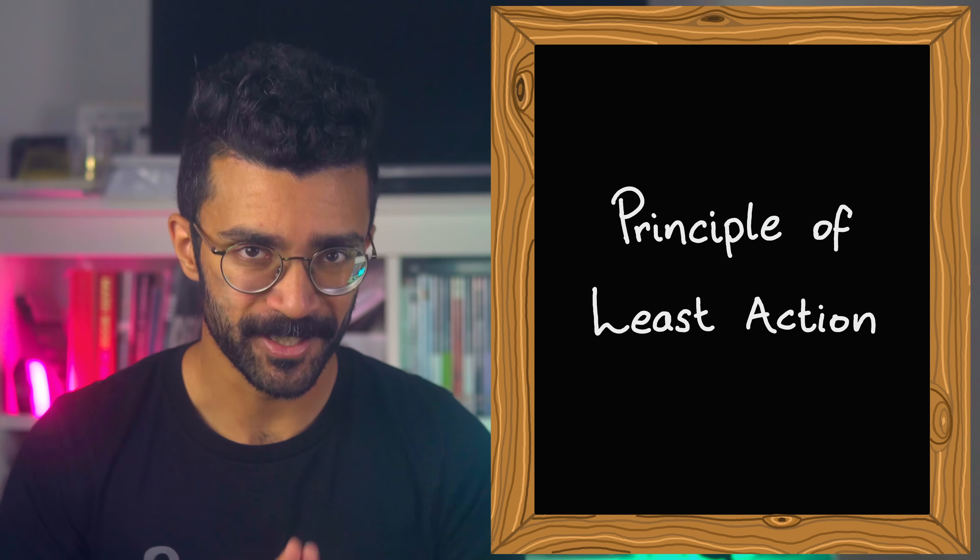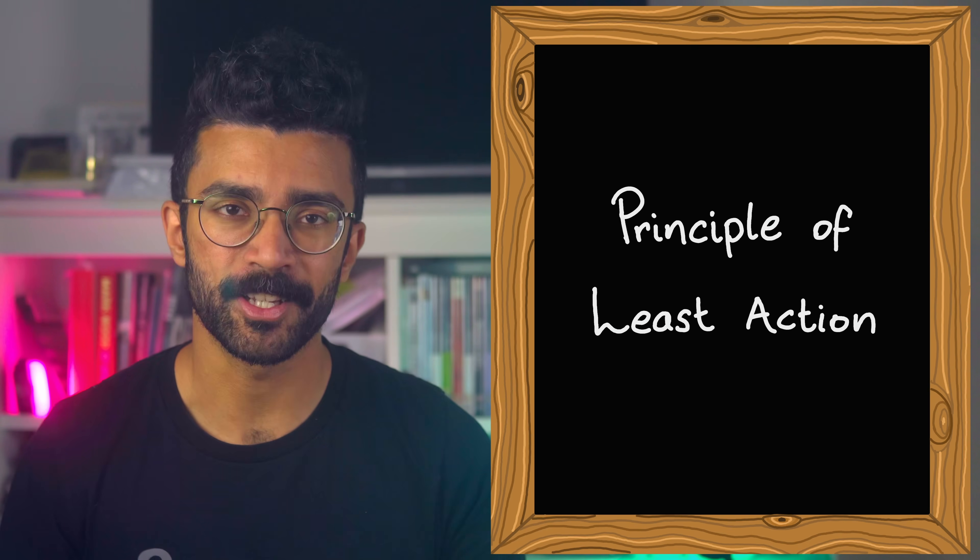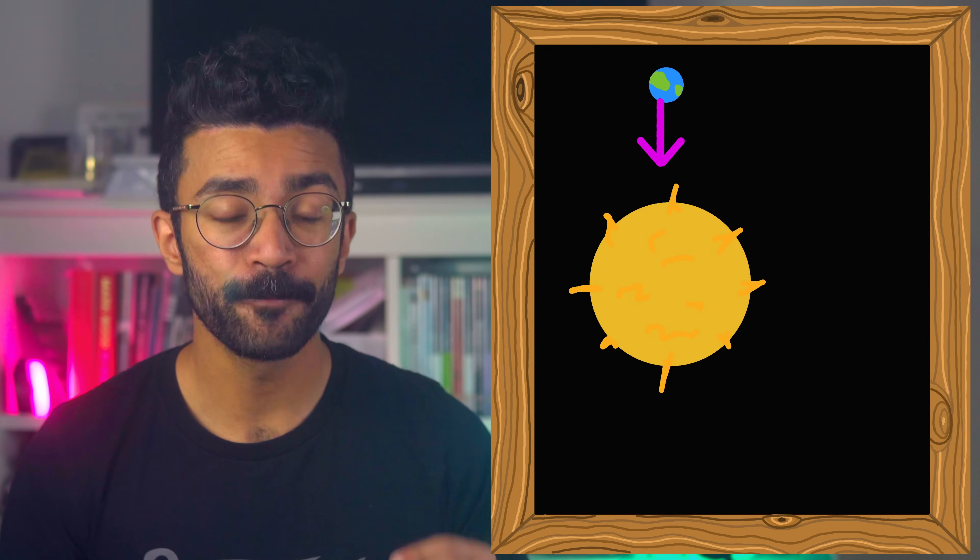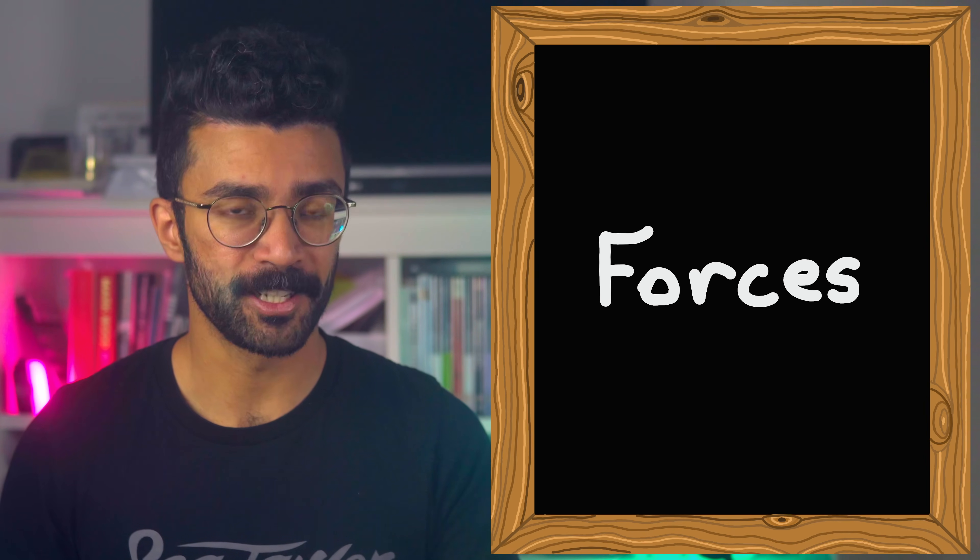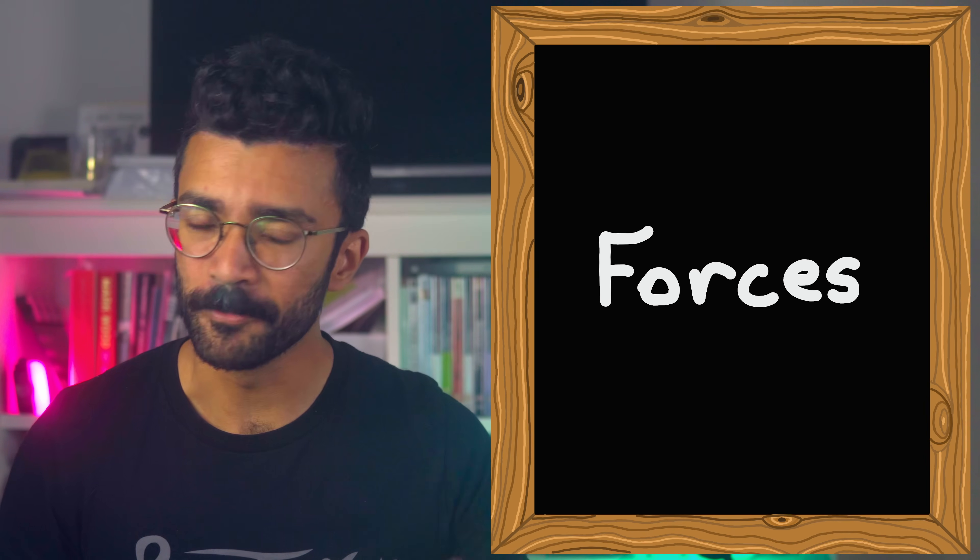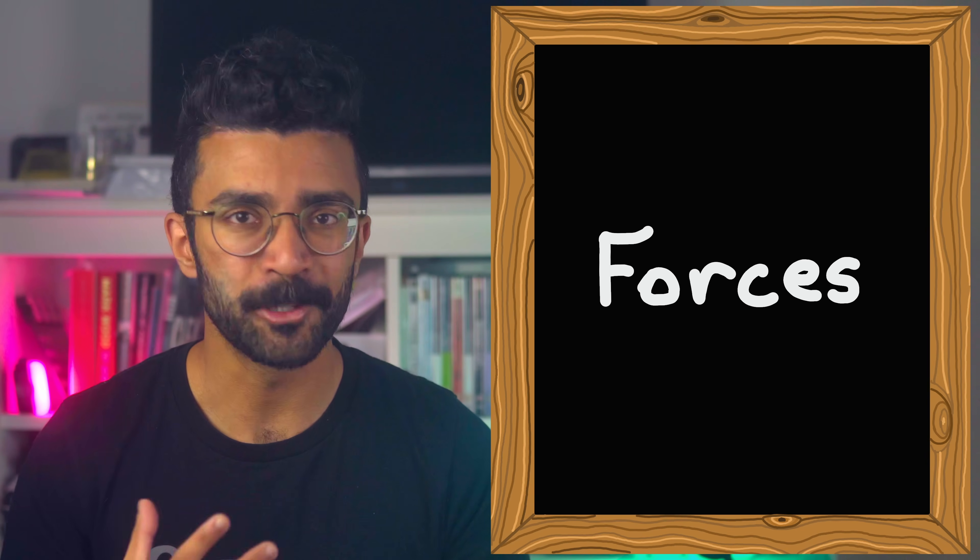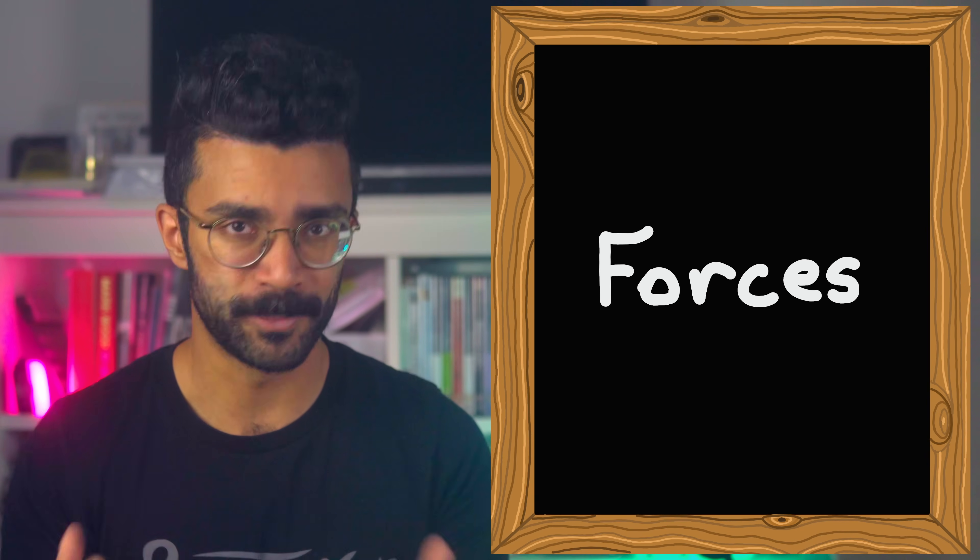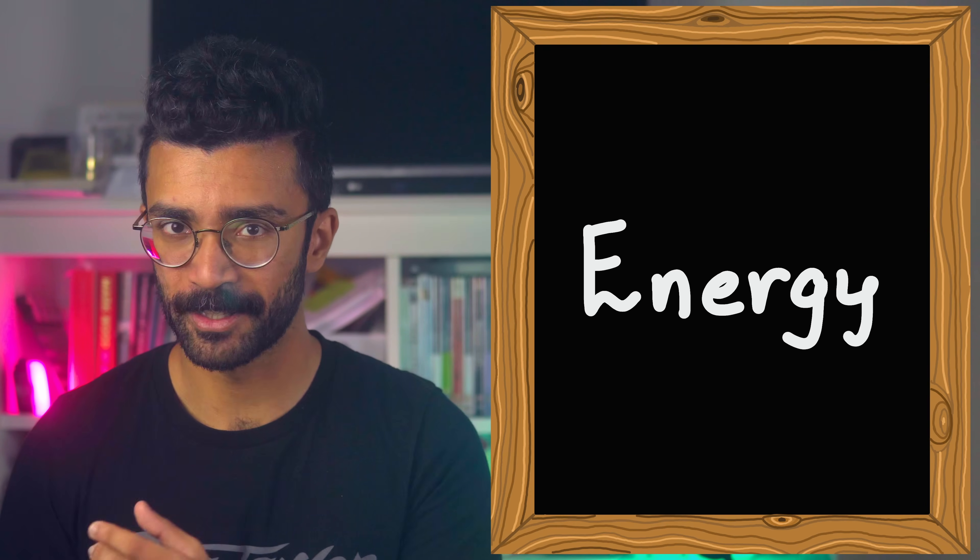When we learn high school physics, we often start by studying objects that exert forces on each other. A ball hitting a wall, two skaters pushing each other away, a planet orbiting a star. All of these systems can be studied by understanding the forces within them. And those can then help us understand how those objects will accelerate and therefore move through space. But there is another way to find what we call the equations of motion of objects in a system.